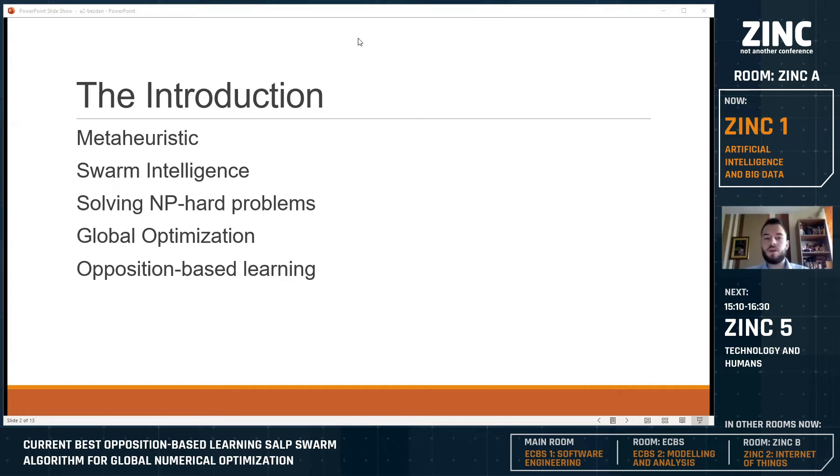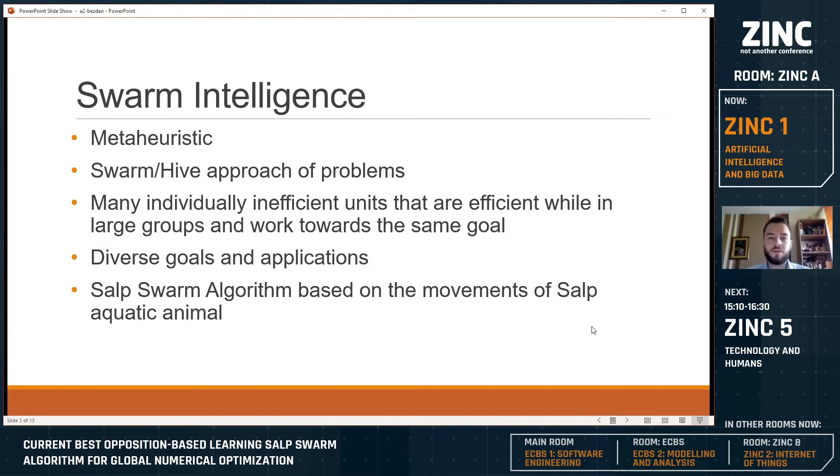In this case, that is opposition-based learning. Opposition-based learning is a method where we do not just search for the best solution, we also search for the worst one. In this process we increase our chances of finding the best solution because if you know what is bad you will let it go.